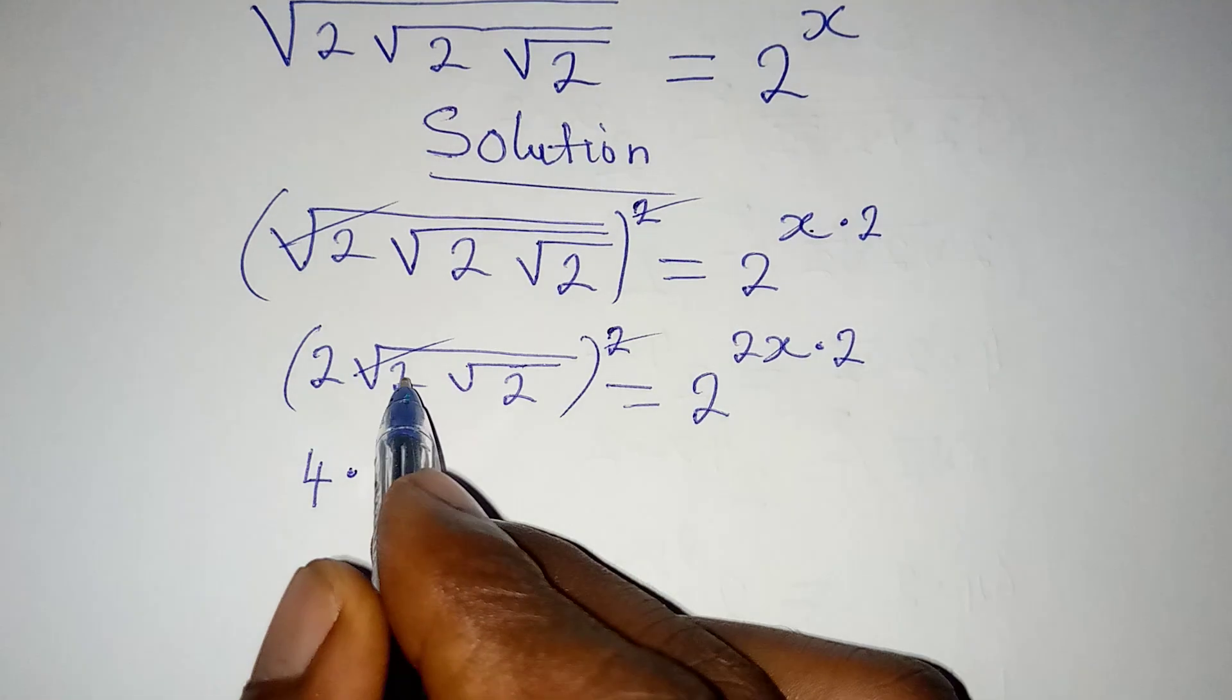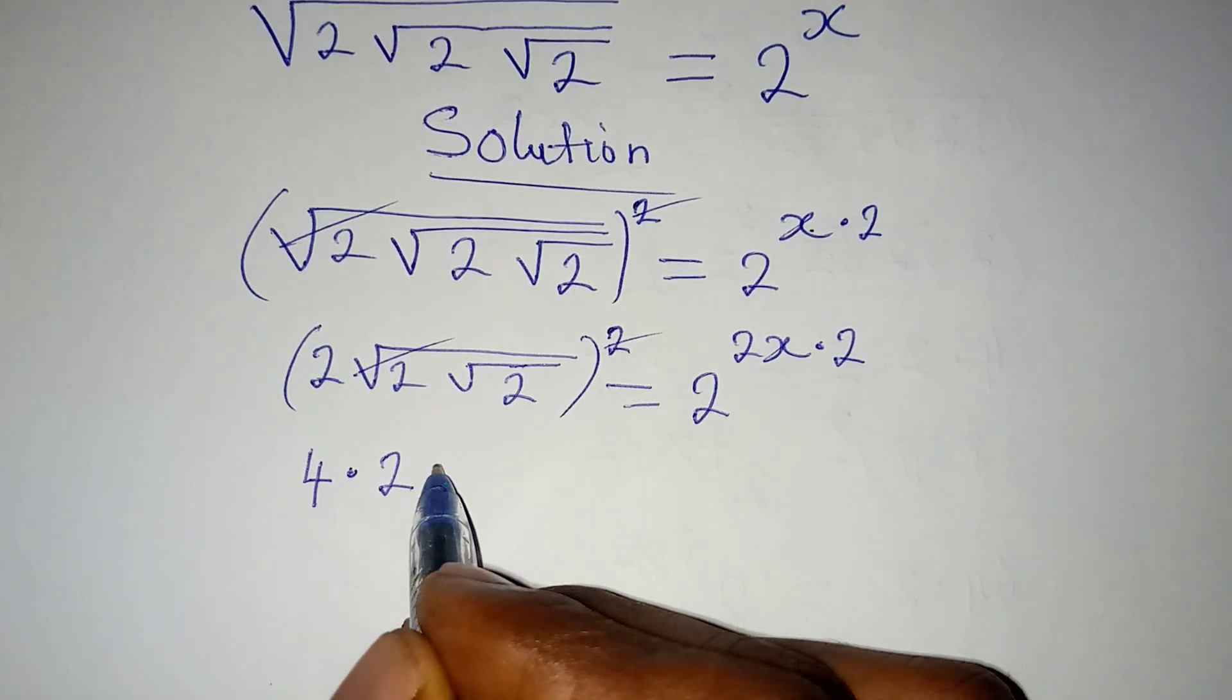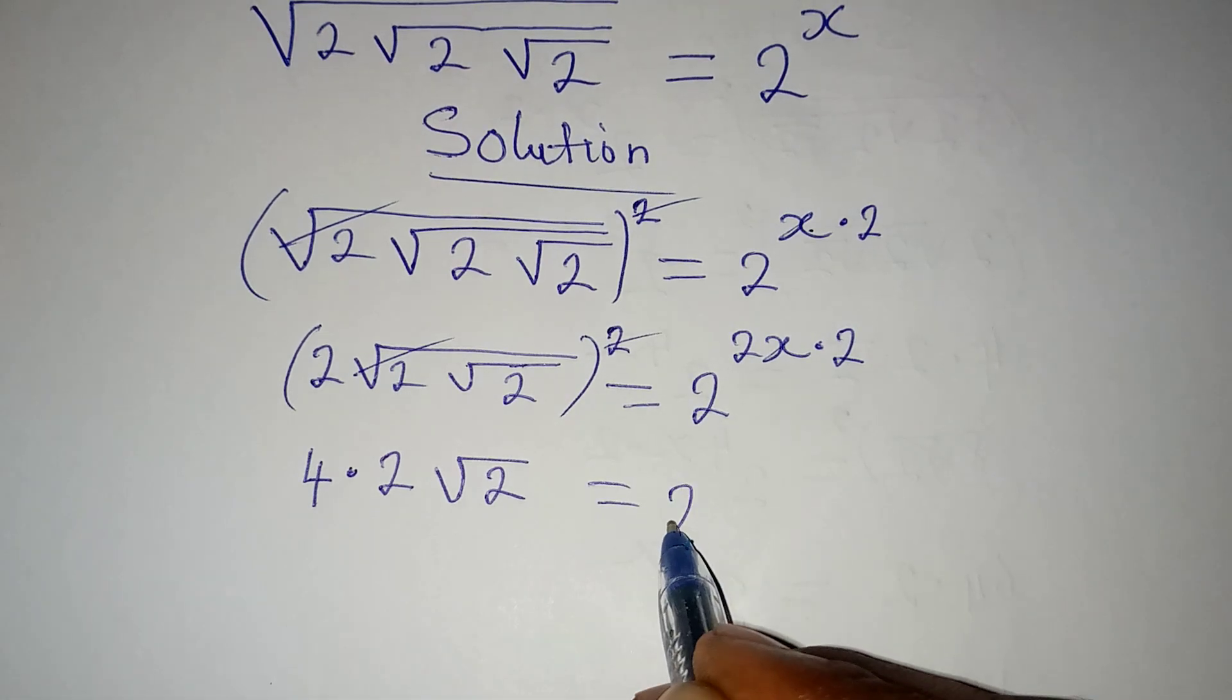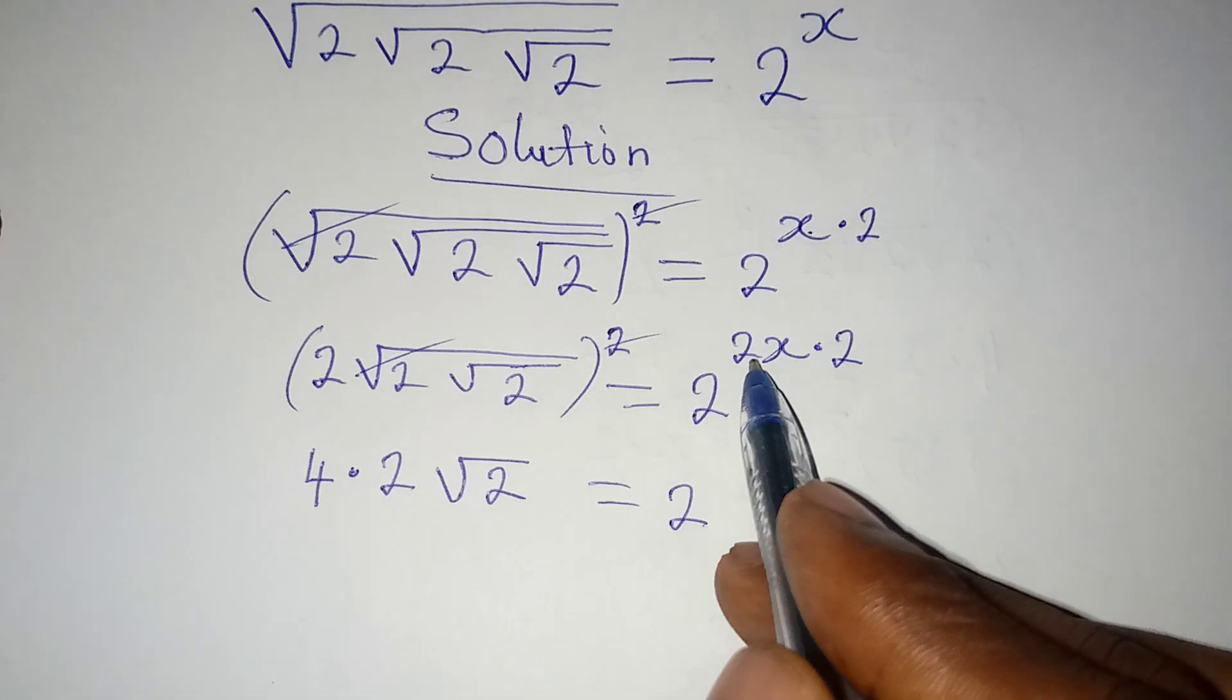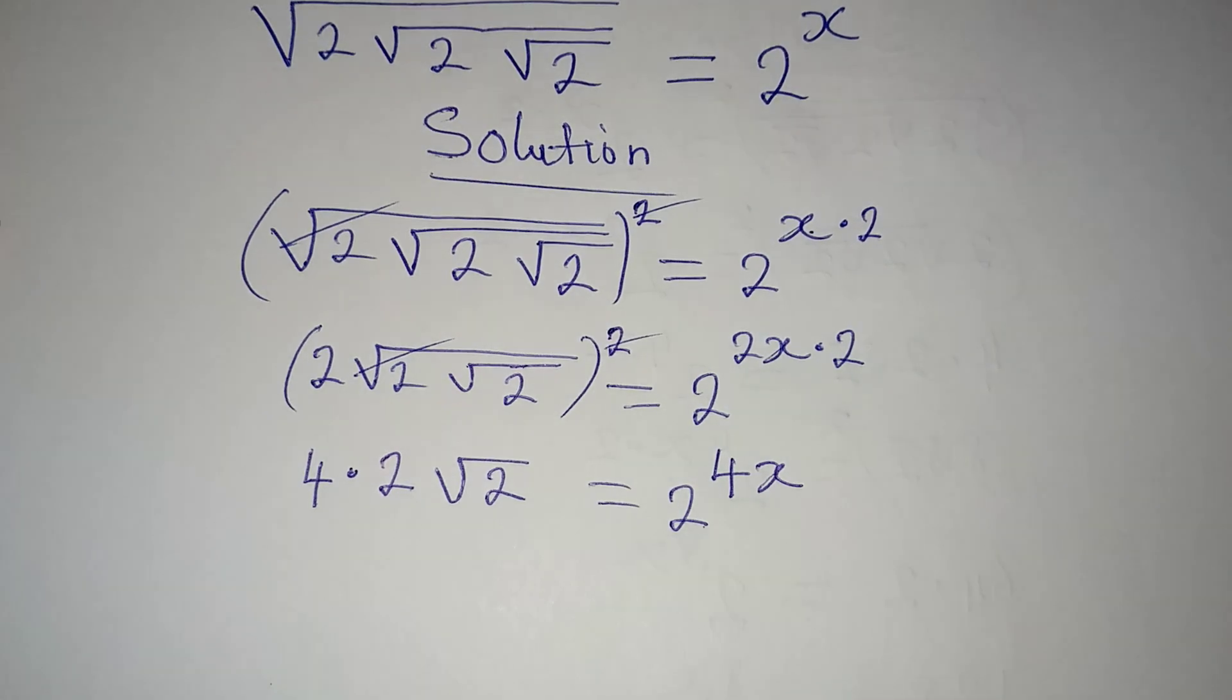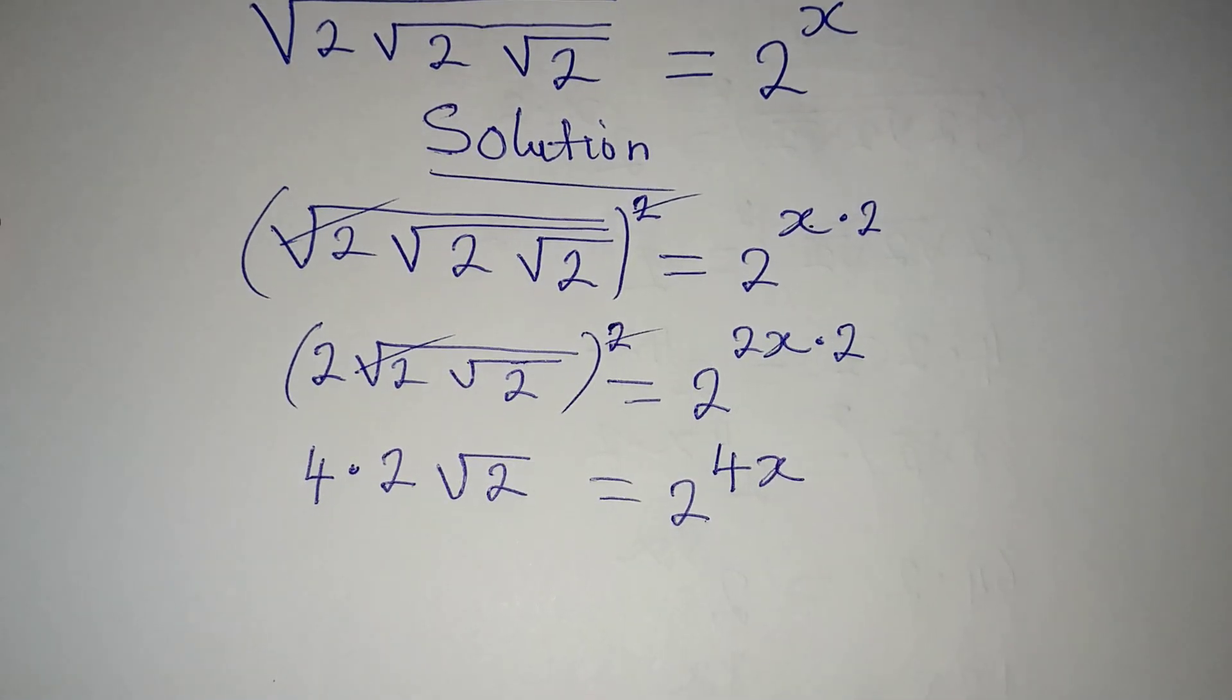Then, I have to multiply, this will be outside now, we have 2, then root 2, which will be equal to 2 to the power of 2x times 2, which is 4x. Then, if I take a step further, I have 8 root 2, which is equal to 2 to the power of 4x.